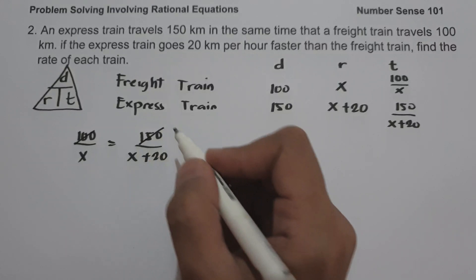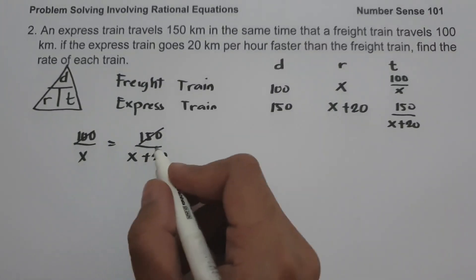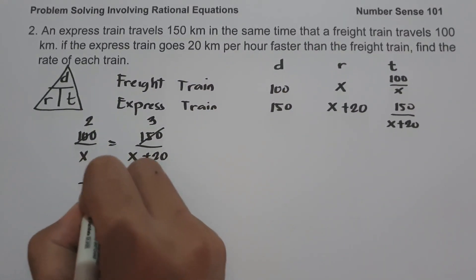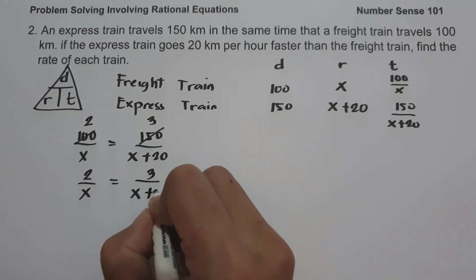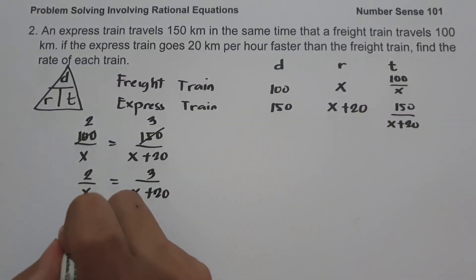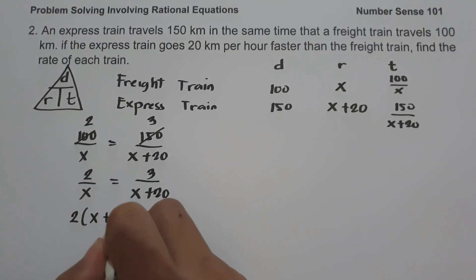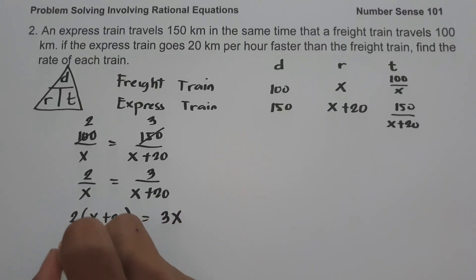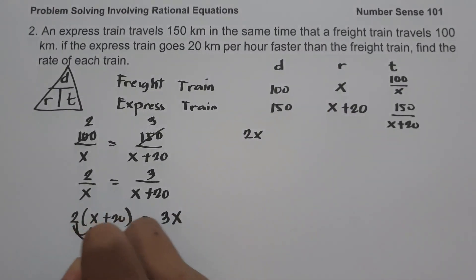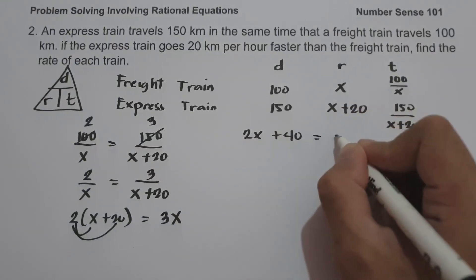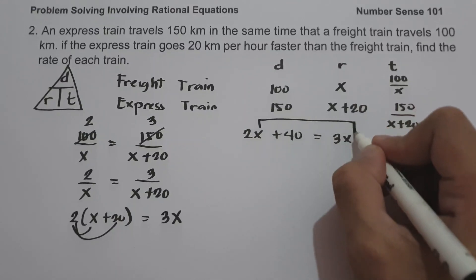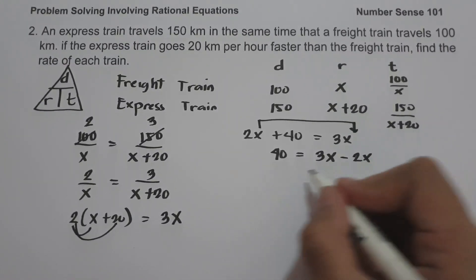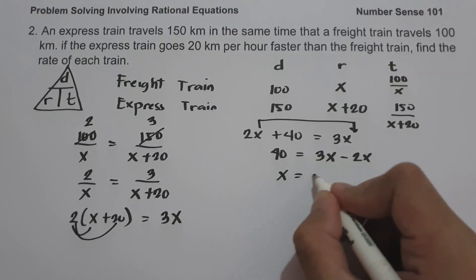Since 100 and 150 are both divisible by 50, let us simplify: 100 becomes 2 and 150 becomes 3. So we have 2 over x equals 3 over x plus 20. Let us cross multiply: 2 times x plus 20 equals 3x. That gives us 2x plus 40 equals 3x. Moving 2x to the side of 3x, we get 40 equals 3x minus 2x, so x equals 40.